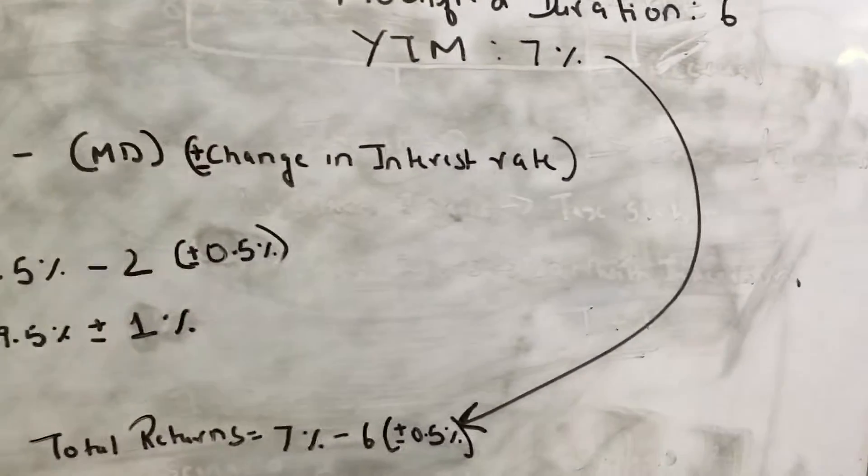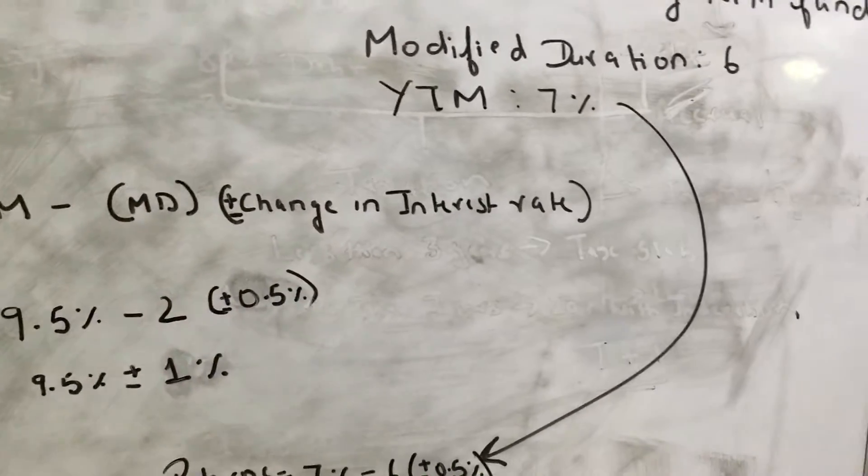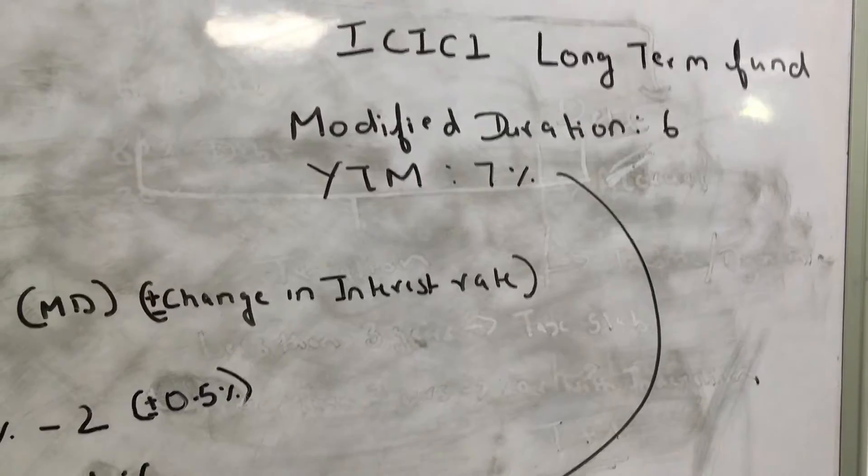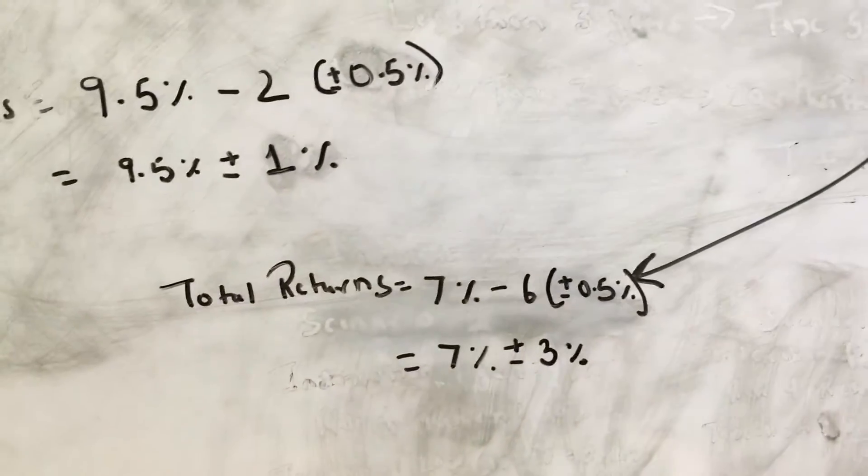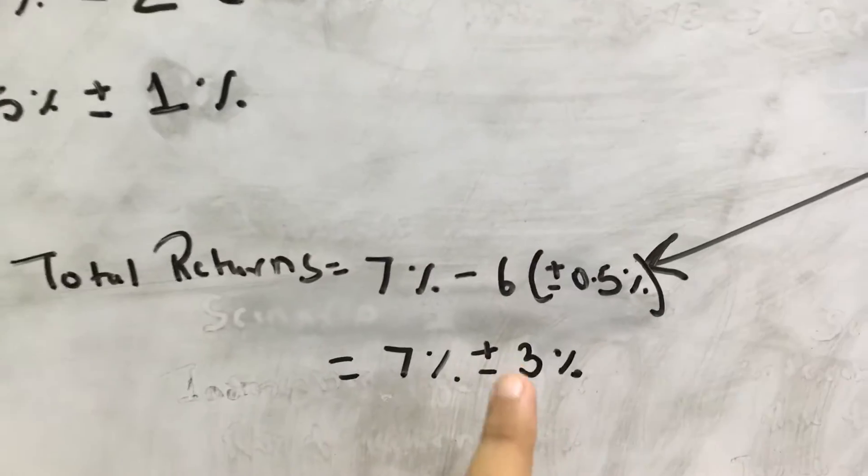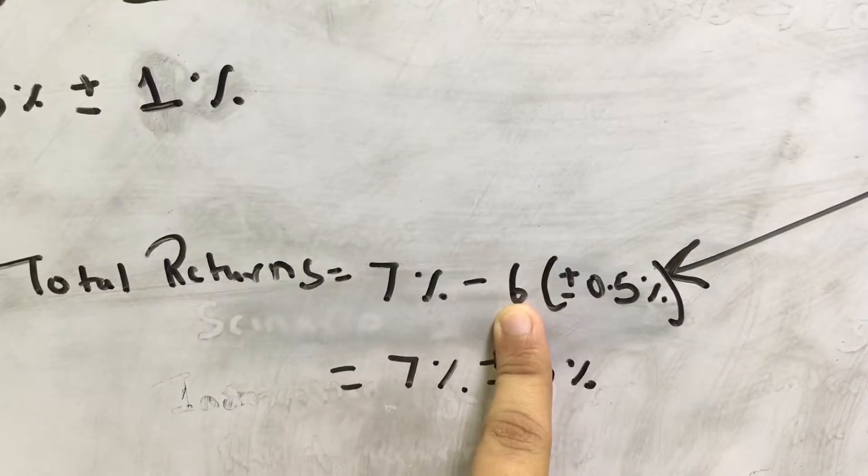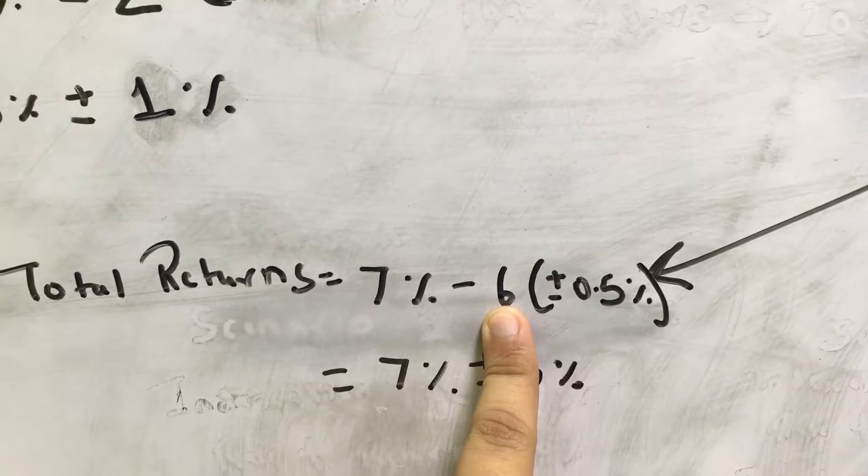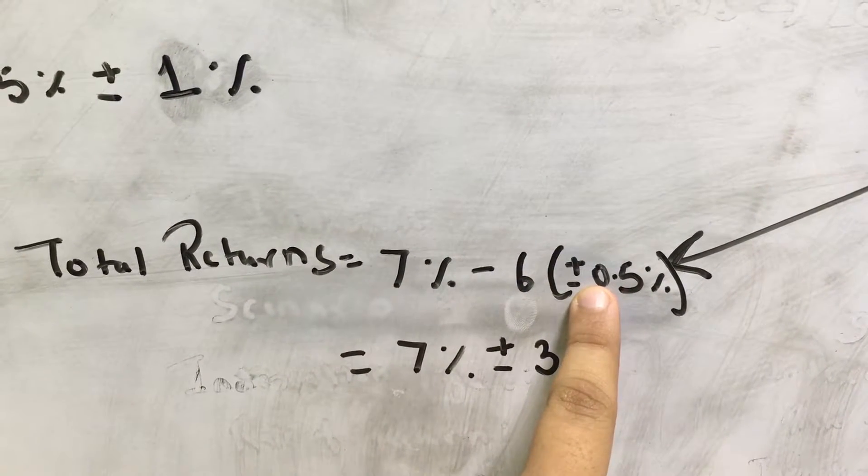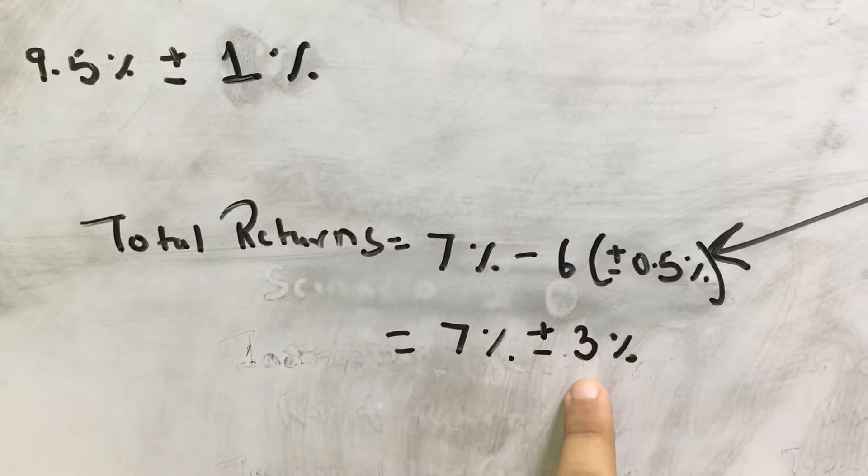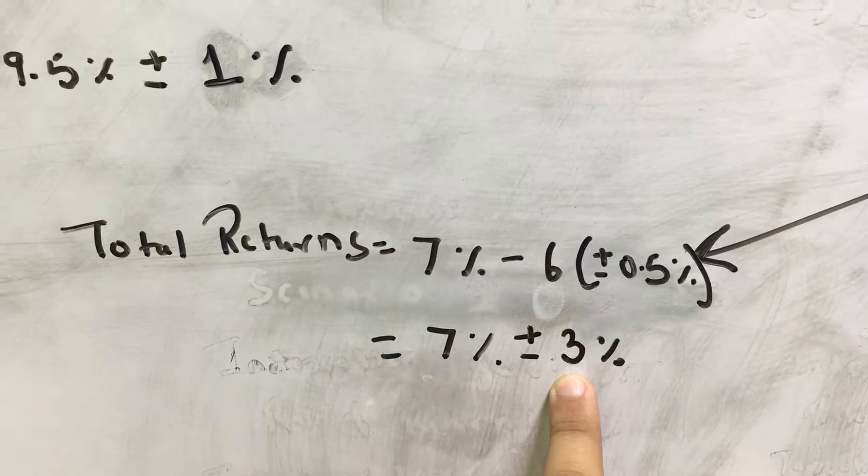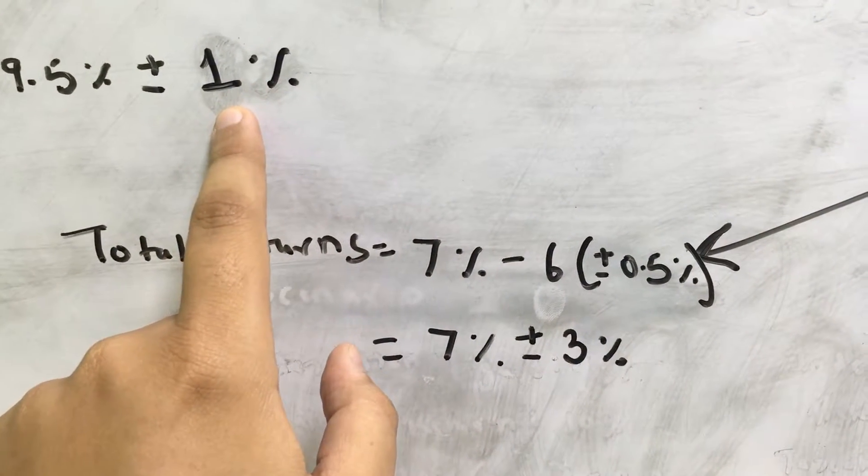Now if you see ICICI long-term fund which is a duration product, which is an income or a dynamic product, the YTM is 7% and the modified duration is 6%, so my sensitivity goes up six times. So if there is a rate down or a rate hike, the differential in returns is close to 3% as compared to 1% in this particular fund.